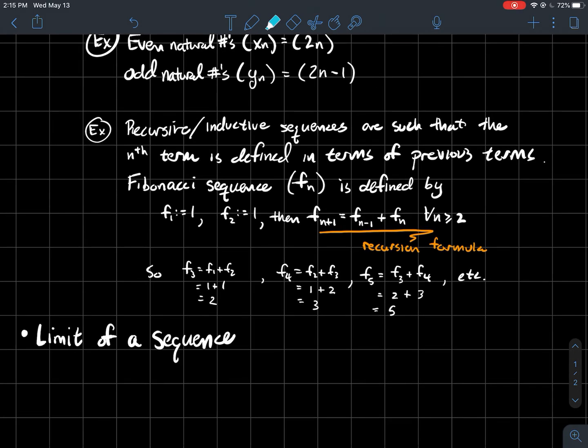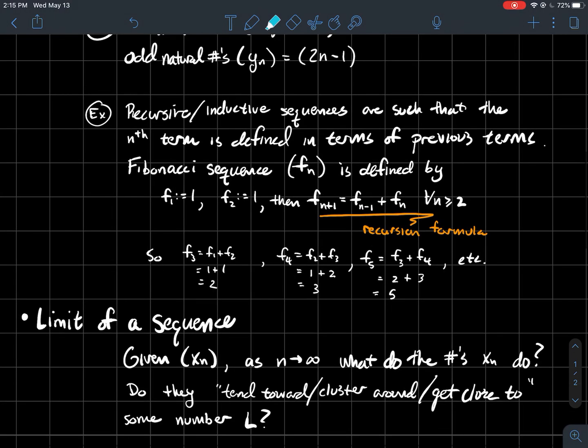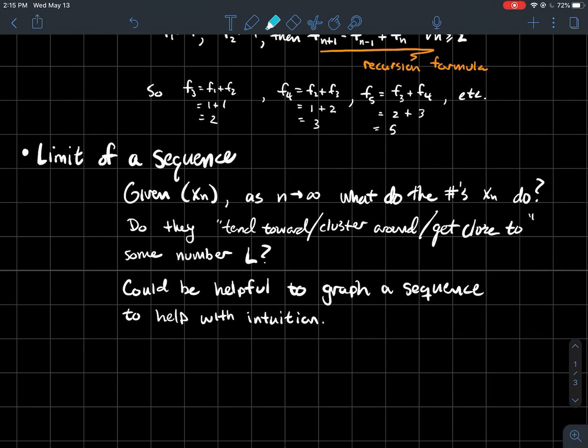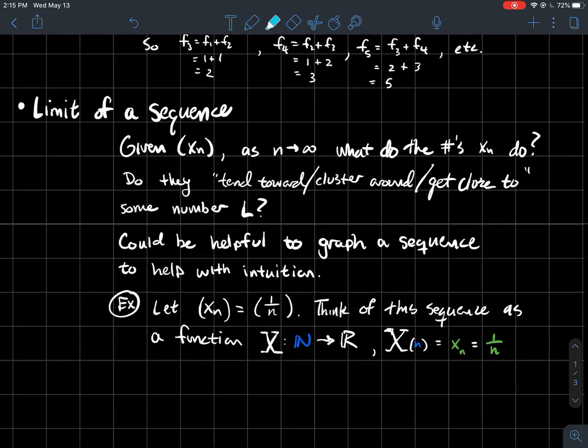Now let's talk about the limit of a sequence. A sequence is an infinite list of real numbers. So if you're given a sequence, as n goes to infinity, in other words, as you're looking really far down in the terms, what do those numbers xₙ actually do? Do they tend toward or cluster around, or do they get close to some number L? And I put quotations around those phrases because we need to try to make that precise.